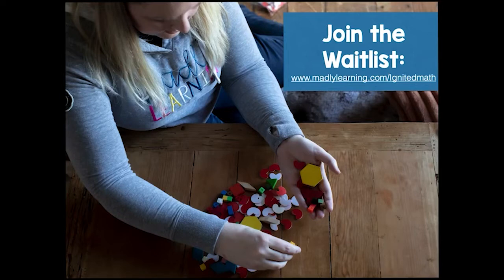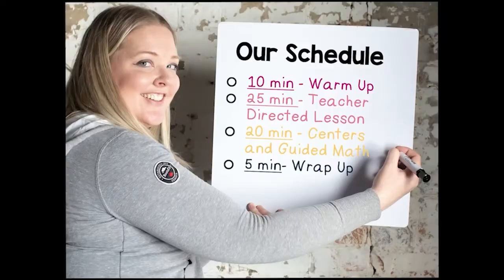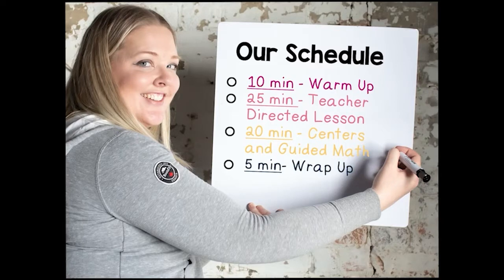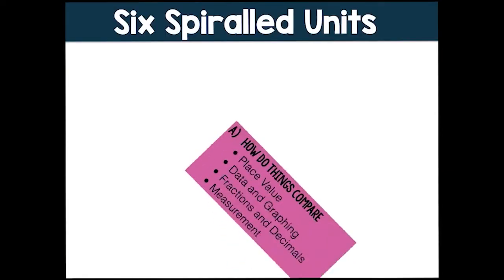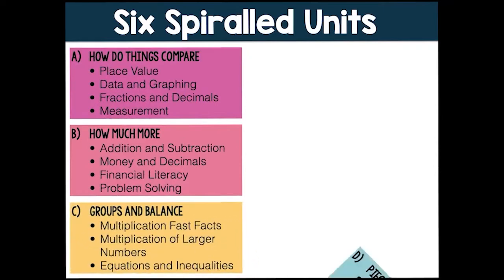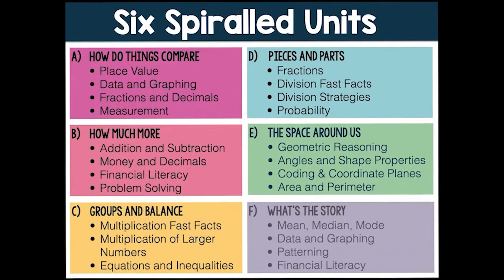Ignited Math is based on a teaching schedule that includes four different components: first, about 10 minutes of bell work; then a 25-minute teacher-directed group lesson with modeled, shared, inquiry math talk lessons; then 20 minutes of student-centered independent activities while the teacher does guided math; and about 5 minutes of consolidation. Each Ignited Math week is broken into units — there are six full units, each with five weeks of instruction and a project to wrap up that unit.